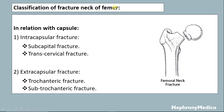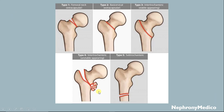Classification of fracture neck of femur: in relation with the capsule, it may be intercapsular or extracapsular. Intercapsular fracture includes subcapital fracture and transcervical fracture. Extracapsular fracture includes trochanteric fracture and subtrochanteric fracture. This picture shows intercapsular fracture, extracapsular fracture, and subtrochanteric fracture.